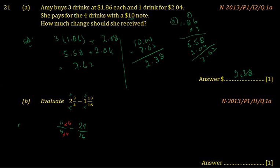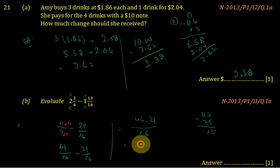So it becomes 44/16 minus 29/16. So the ultimate result is... 44 minus 29. So 44 minus 29 means 5, 5, 1, 15. So it is 15/16.